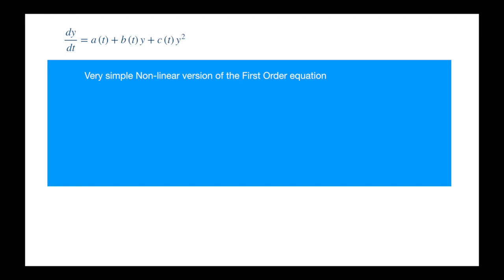You will also see it written in terms of independent variable x, as opposed to t, but this is just a presentation matter. Now that you have seen the equation, it won't come as a big surprise if I were to say that this equation was studied and solved in the very early days of differential equations — the times of Newton, the real apple guy, Euler, the guy who invented exponential and pi, and the Bernoulli family.